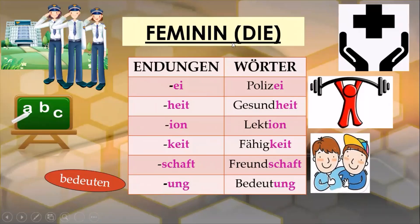Not only will all female people have the article 'die' before them — which includes all female professionals — but nouns other than people will also have the feminine gender. So let's look at typical endings that will help to determine the feminine gender of German nouns.